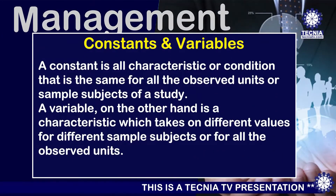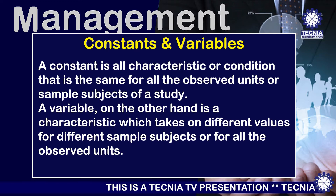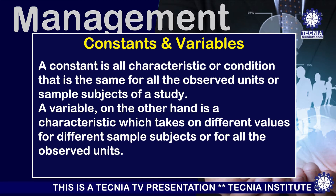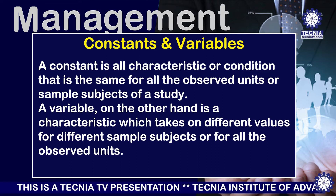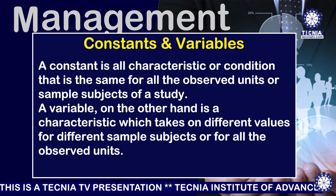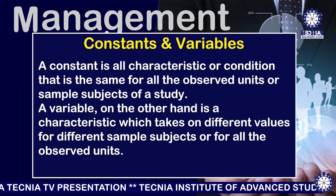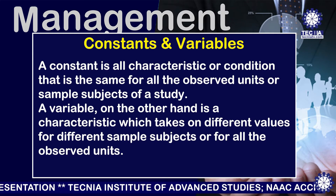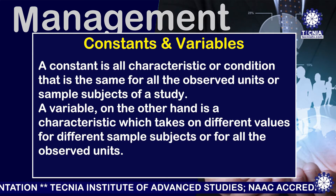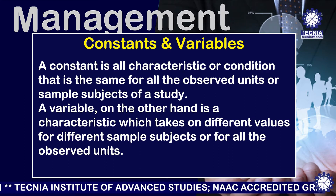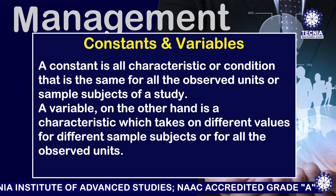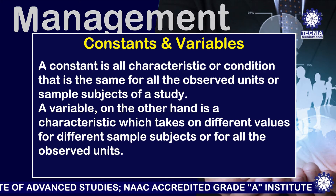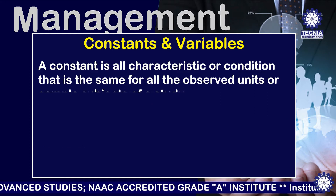What is a constant? A constant is a characteristic or condition that is the same for all the observed units or sample subjects of a study. A variable, on the other hand, is a characteristic which takes on different values for different sample subjects or for all the observed units.